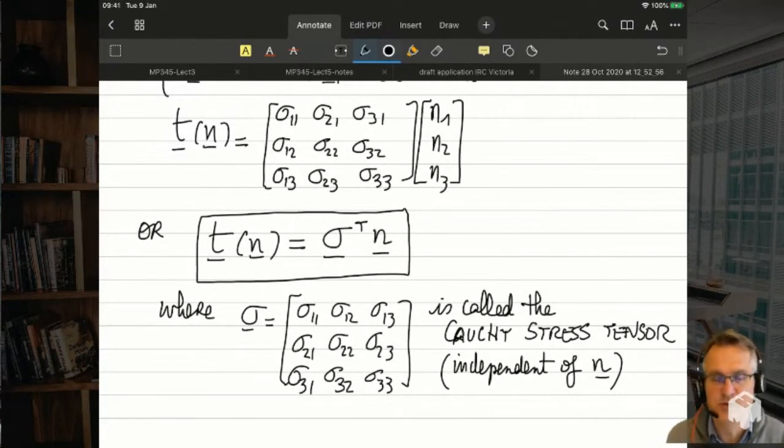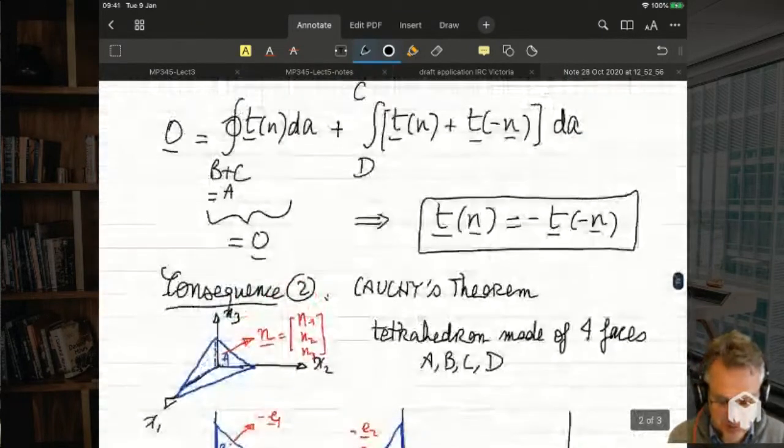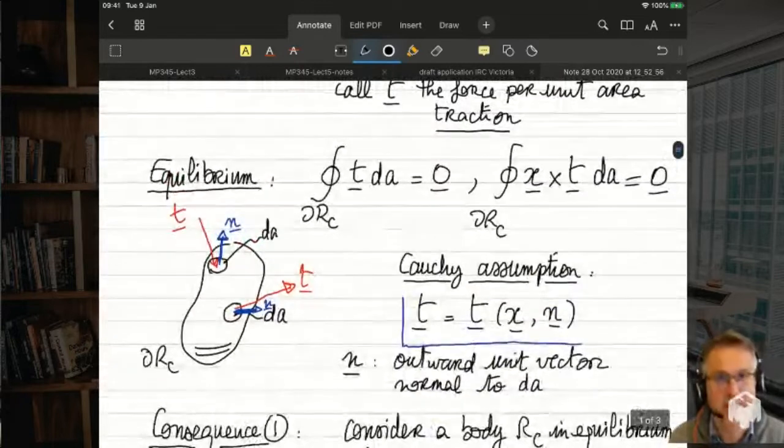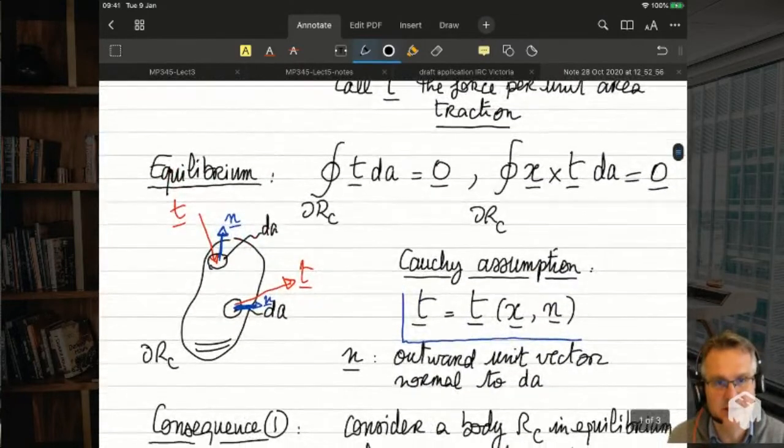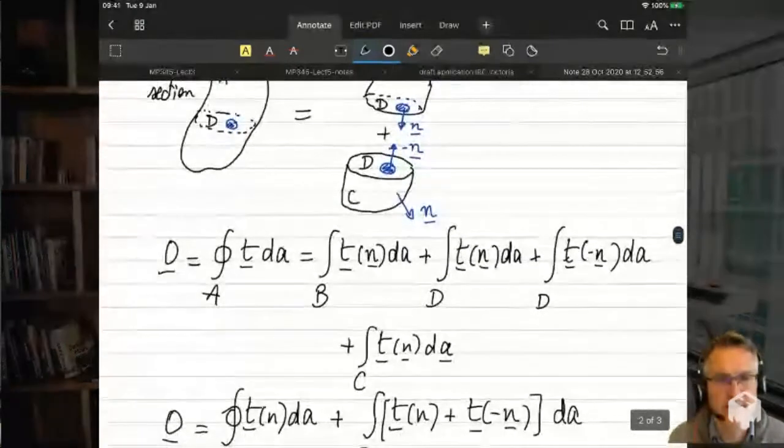Can sigma be a function of position? Yeah, of course. You can apply different forces on different parts of the body. Maybe like I said earlier, I'm just lazy. Really, I should carry that little x everywhere. I just got lazy. I just made explicit the dependence on n.